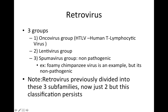There are three groups. As a note, retroviruses were previously divided into three families — now it's just two, but this classification still persists so I would definitely know it. When we think of retrovirus we're going to think of three groups: the oncovirus group, the lentivirus group, and the spumavirus group. I'm really only going to focus on the first two because you don't really see spumavirus come up too frequently.